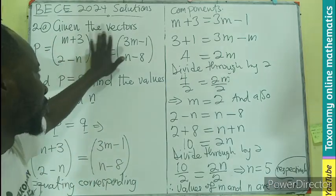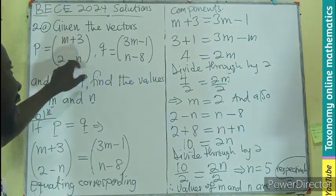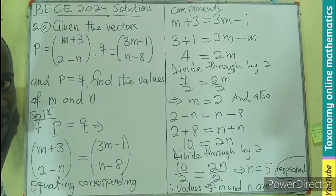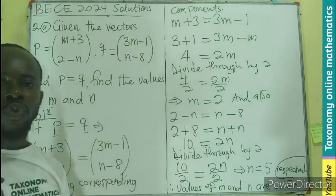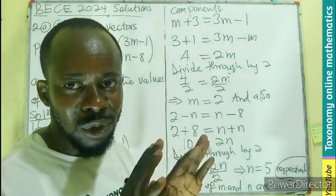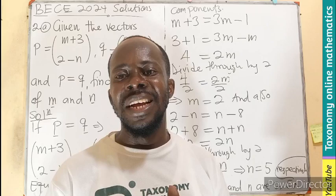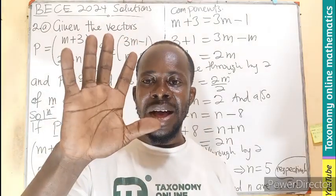So those are the values when put into the places of M and N. It makes the P vector to be equal to the Q vector. Sure, the concept is understood. Thanks for watching. Like, share and comment. Bye-bye.